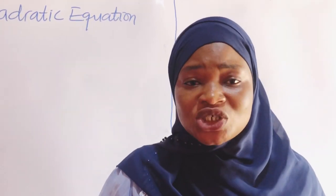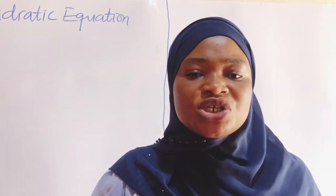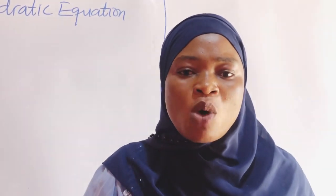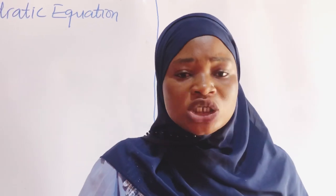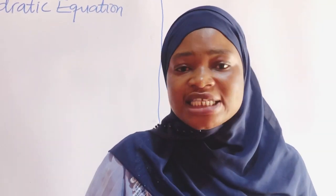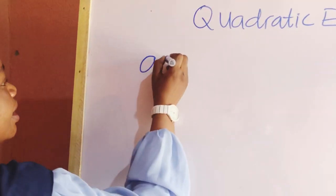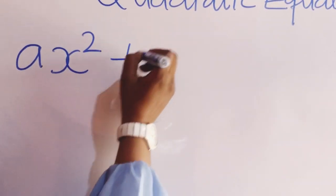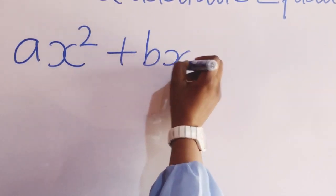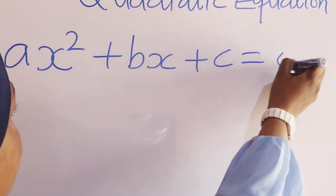A quadratic equation in one variable is an equation in which the highest power of the variable is 2. So the quadratic equation is in this form: Ax squared plus Bx plus C is equal to 0.